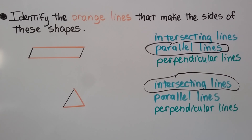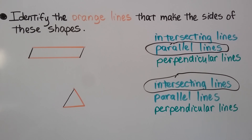Are the orange lines perpendicular lines? Do they cross or meet to form right angles? No, they don't. So this triangle has intersecting lines.